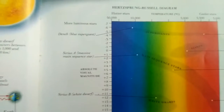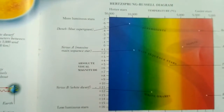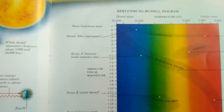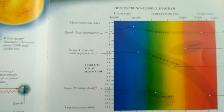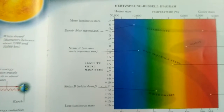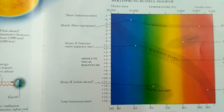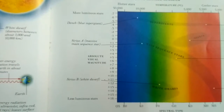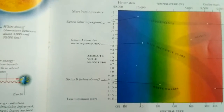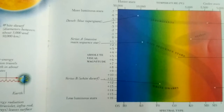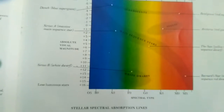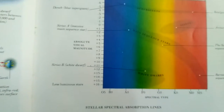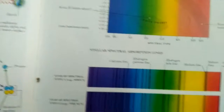You can see the H-R diagram. You can see that red stars are cooler and blue stars are hotter. You can see the more luminous, the brightest stars, also known as white dwarfs. You can see the absolute visual magnitude and the spectral line.